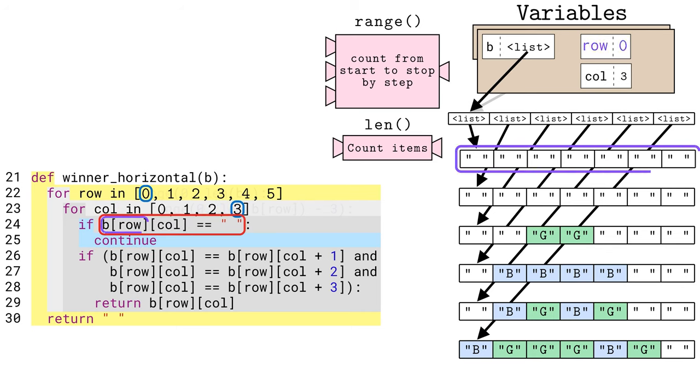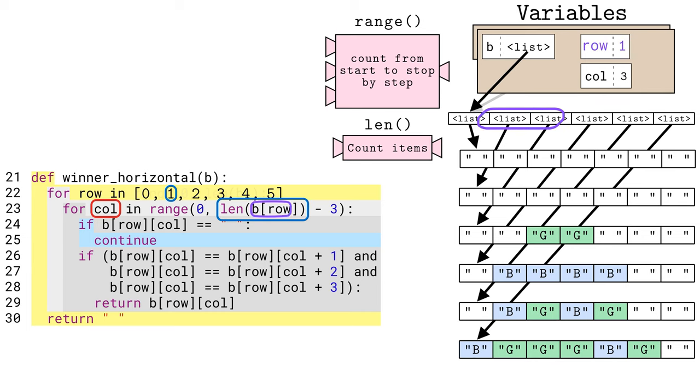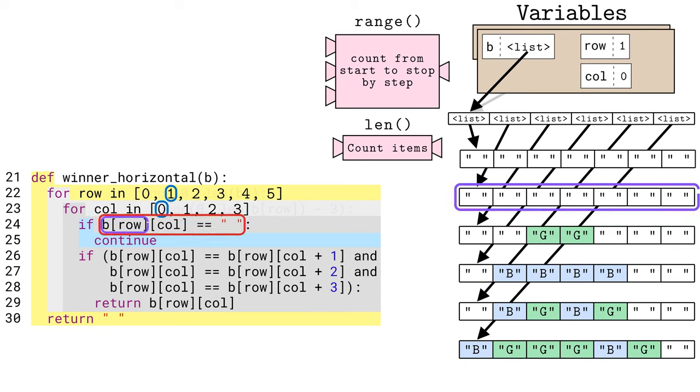Soon, the inner for loop on line 23 ends, having checked all columns in the top row, and the outer for loop on line 22 goes to the next value, continuing the search on the second row, that is row index 1. Python restarts the inner for loop on line 23, even recomputing the length of the row before expanding the range. We the humans know that the board is a rectangle, but Python cannot know that without measuring. We the humans can also see that row index 1 is empty, so let's fast forward the animation until we get to something interesting in row index 2.